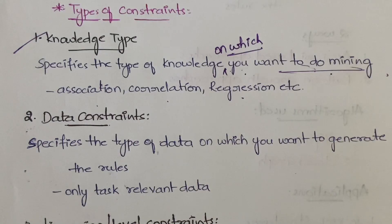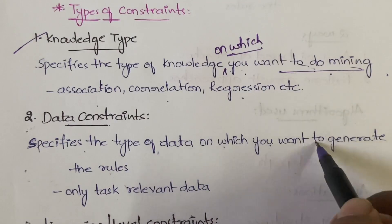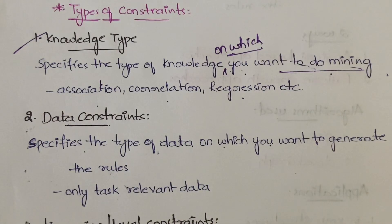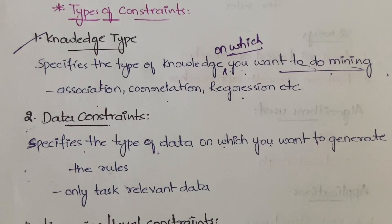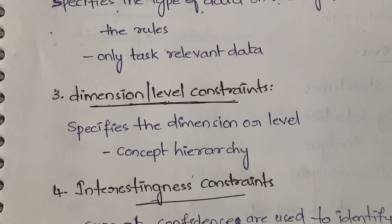Next comes data constraints. Data constraints specify the type of data on which you want to generate the rules — on which type of data you want to generate the rules. Simply, you can select only task-relevant data. Whatever data is needed by the user, only that has to be used. It specifies what that task-relevant data is.